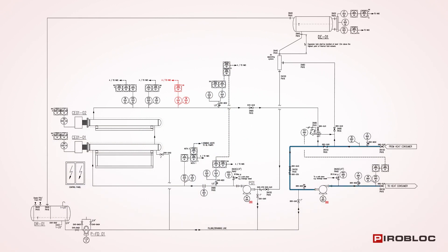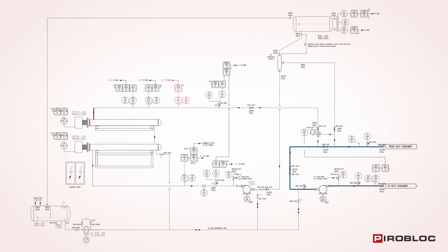When heat is required, the three-way valve connected to the primary circuit provides the required flow proportionally.